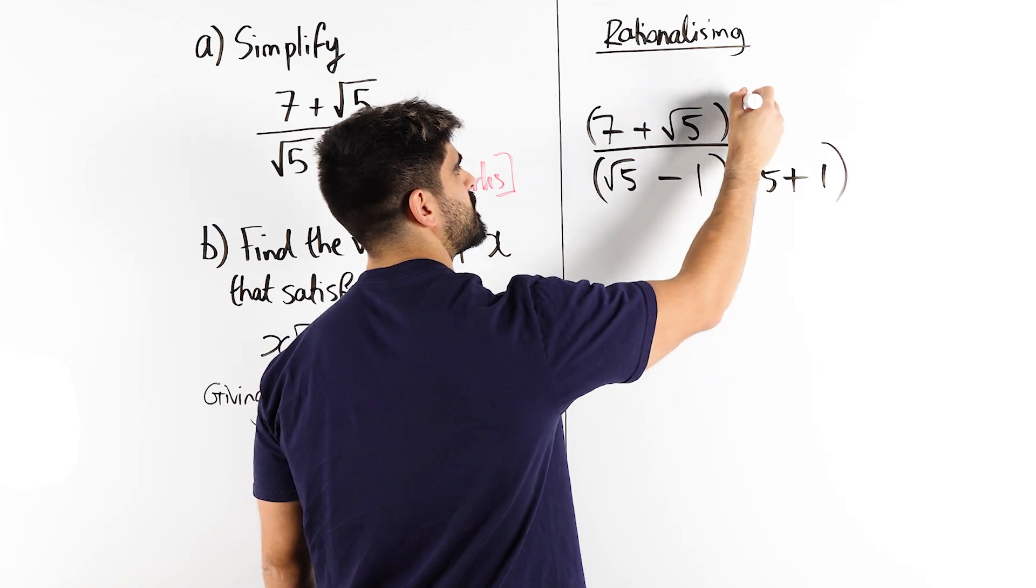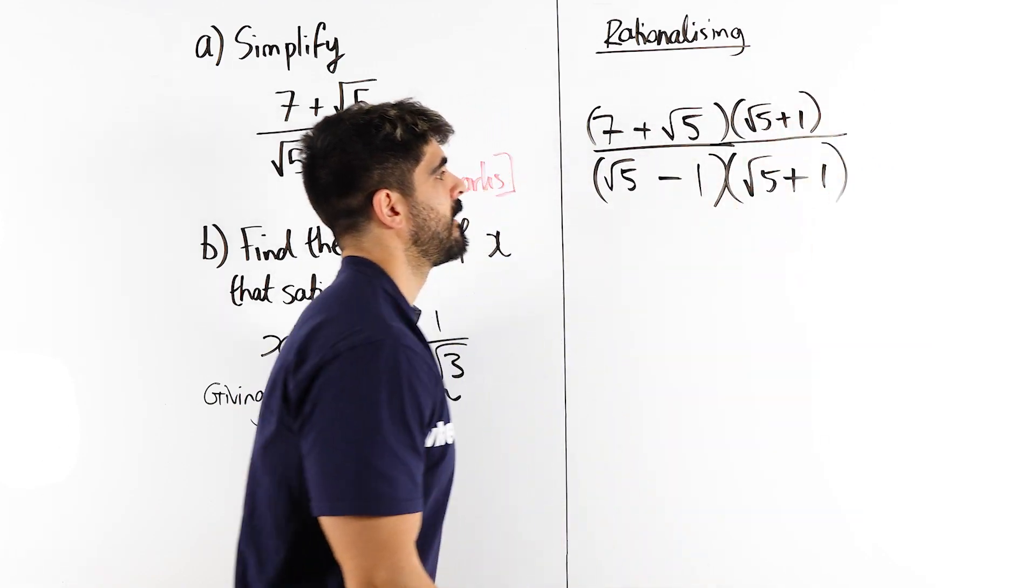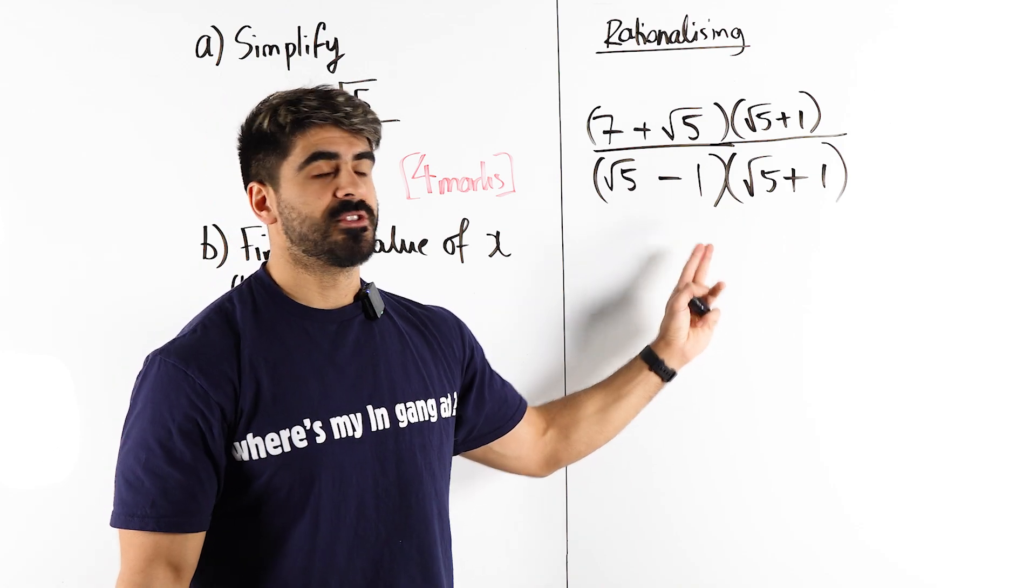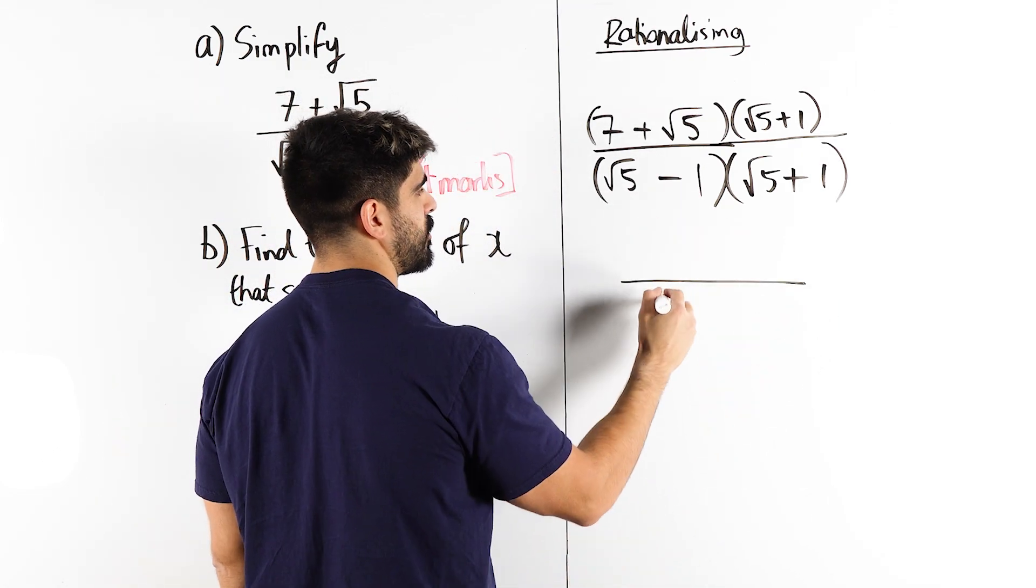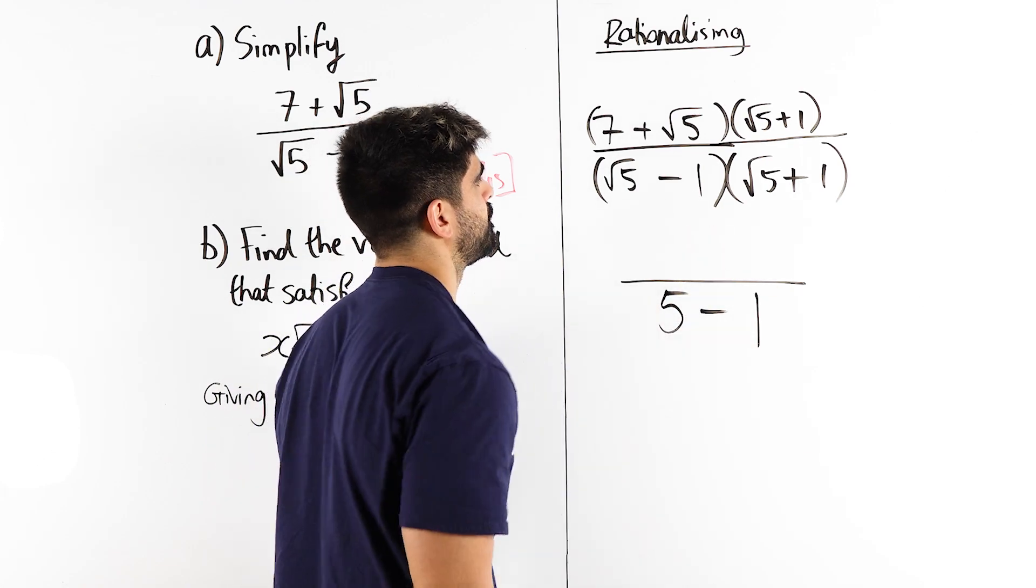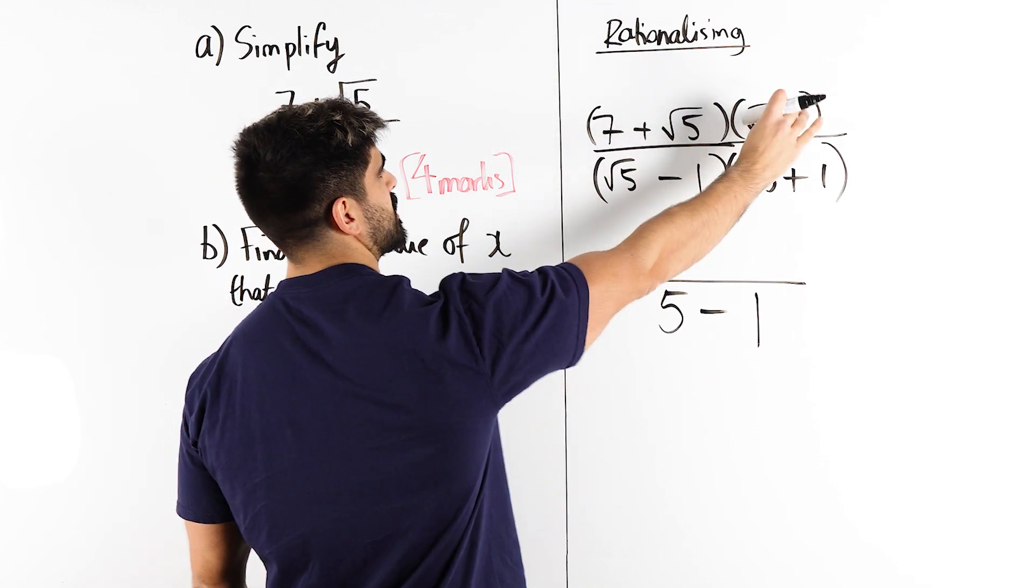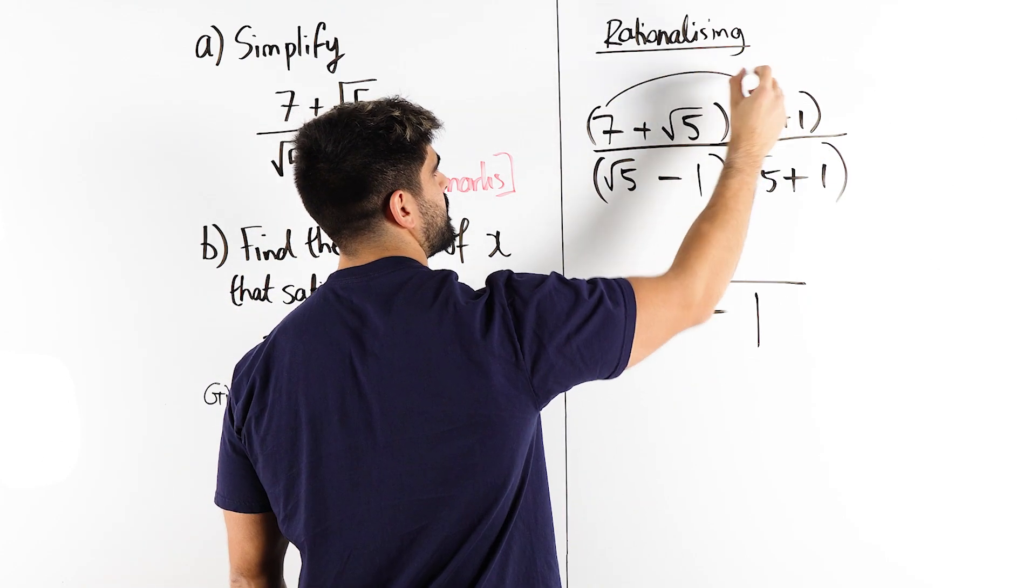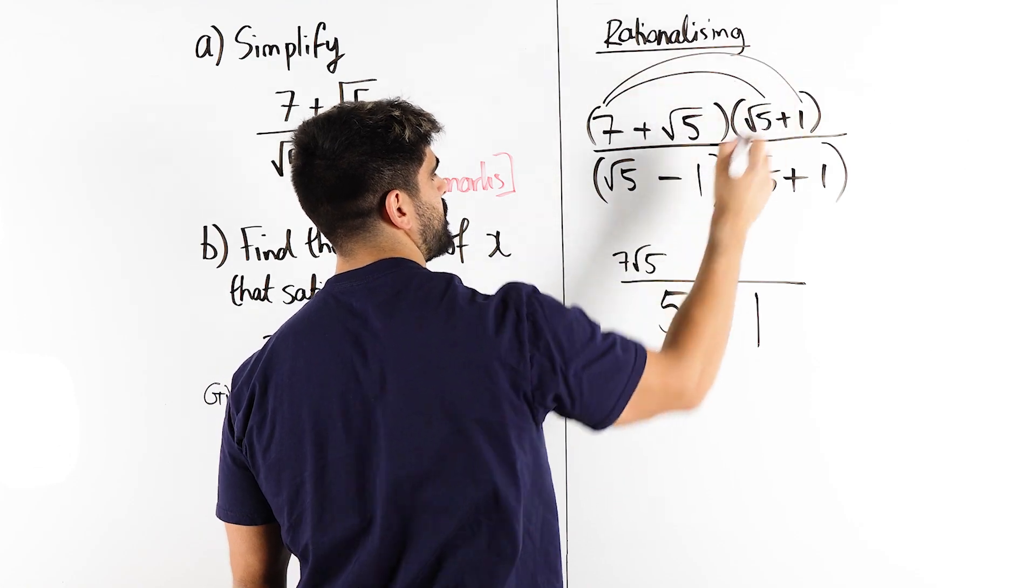Now here we have to be careful, there's two terms there, we're going to have to introduce a bracket. Difference of two squares. When we simplify that, I square this, root 5 squared is 5, square this, 1, minus them. You don't need to show middle terms when you're expanding the bracket. Now we need to expand this as well. So we have 7 times root 5 is 7 root 5. Here we have 7.